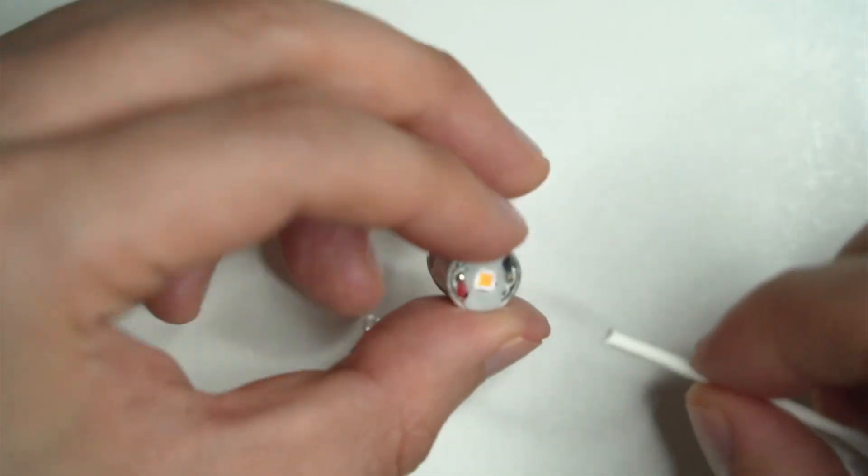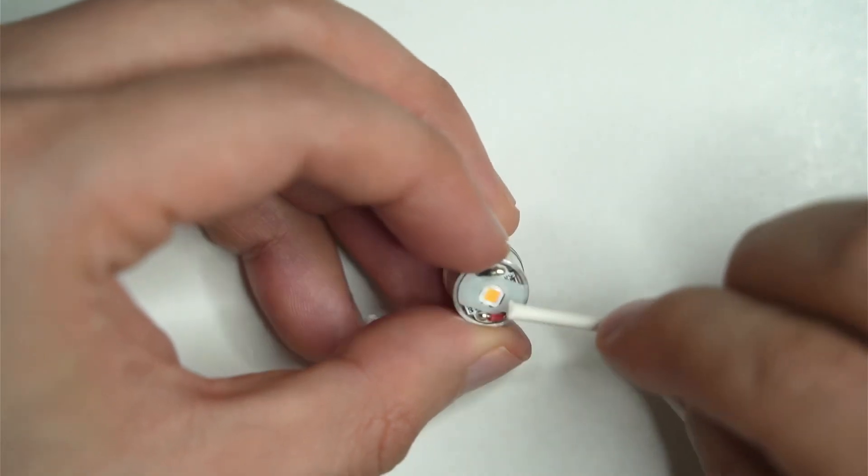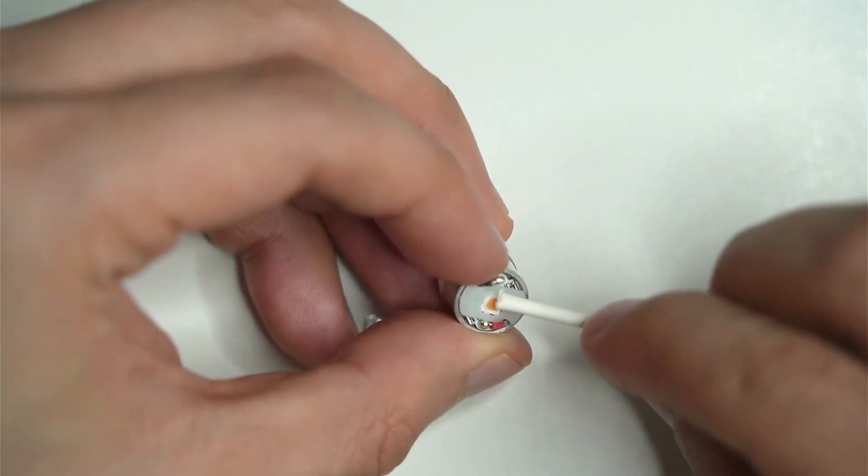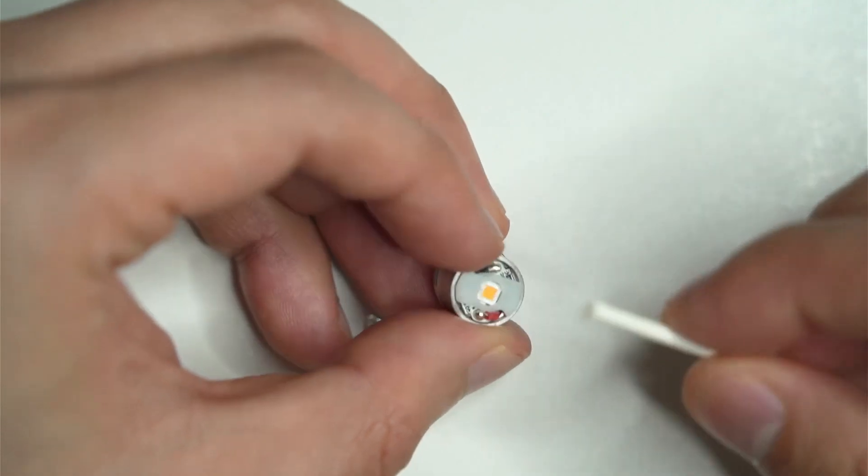But I have found, I mean if you look inside it, there's still bits of it in the corner. Bits of the dome that haven't sort of come off. So I'm just going to give it a bit of a quick cleanup around the edges.